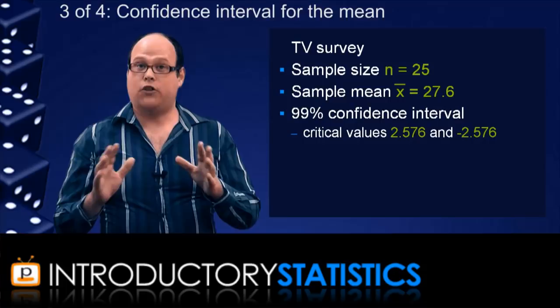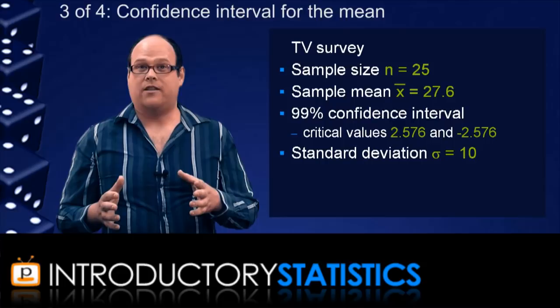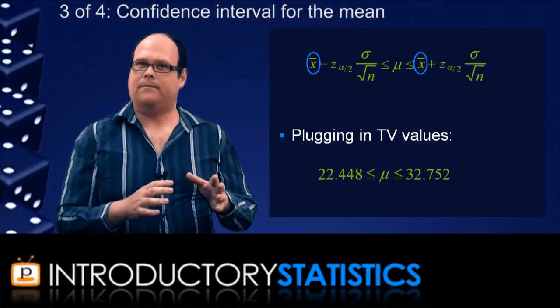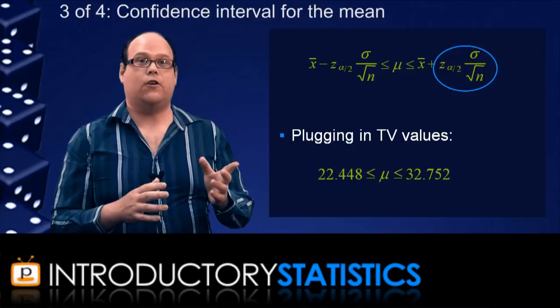And we're assuming that the population standard deviation is known to be 10 hours. The formula for the confidence interval is given here. Plugging the values in gives us the interval between 22.448 and 32.752 hours. Notice the interval is centered at the sample mean, and the size of the interval is determined by how big or small this term is.